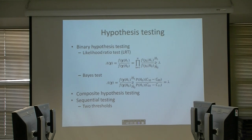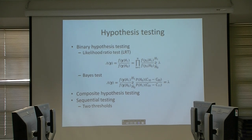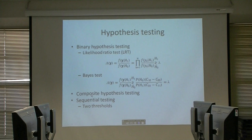In hypothesis testing, there are three parts: binary hypothesis testing, composite hypothesis testing, and sequential testing. In binary hypothesis testing, it is the likelihood ratio — the probability that the sensing data corresponds to a primary user present versus not present — compared against a threshold to decide whether we have a primary user on some frequency.